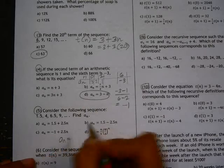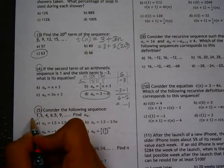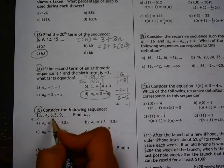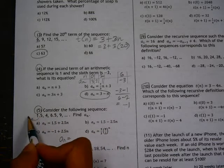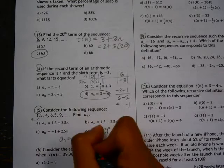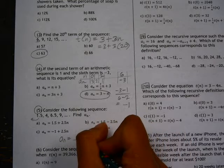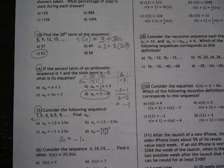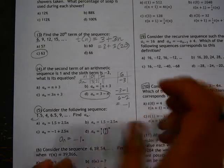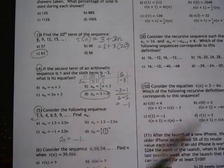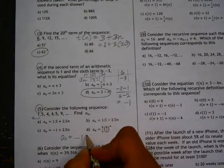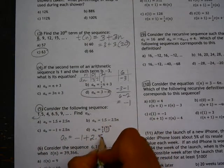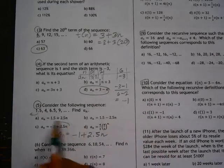So A sub N equals... to get the initial value, we need to go back one. So since we're adding two and a half, we would have to subtract two and a half. So one and a half minus two and a half is negative one and a half. And then we're adding two and a half each time, so that matches option C.